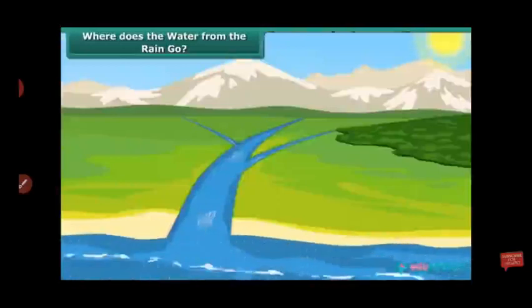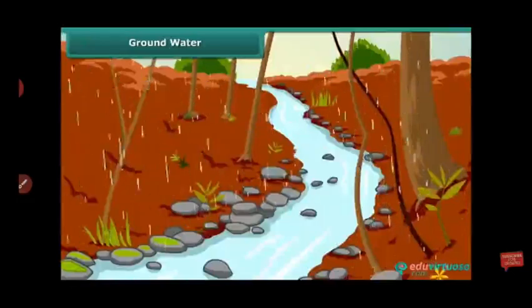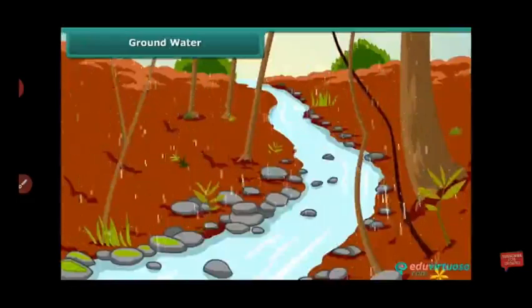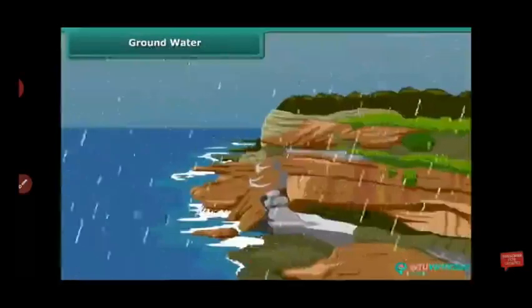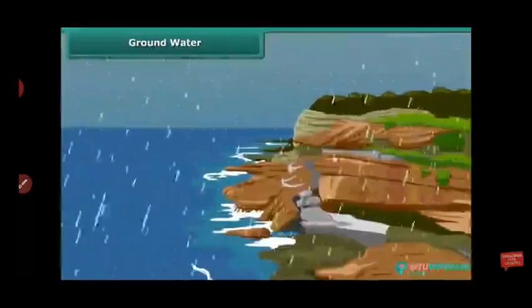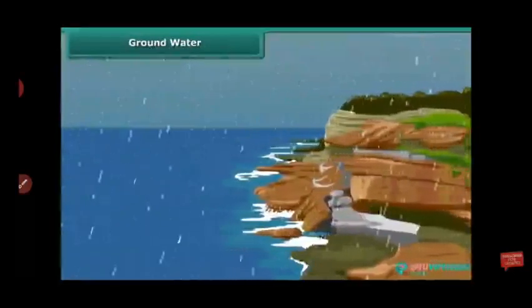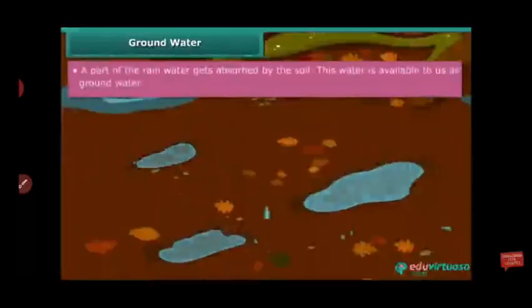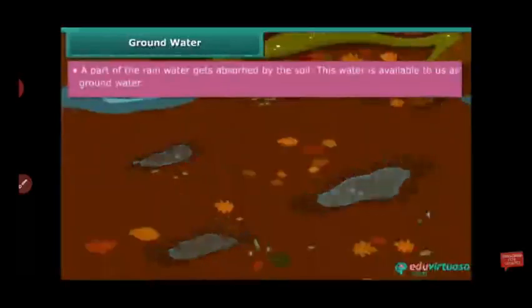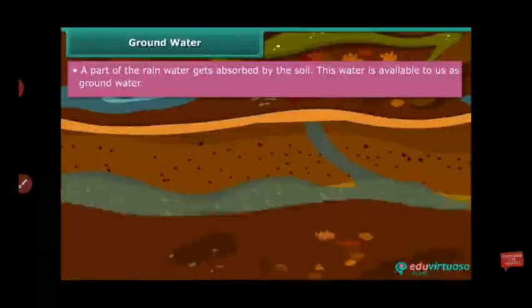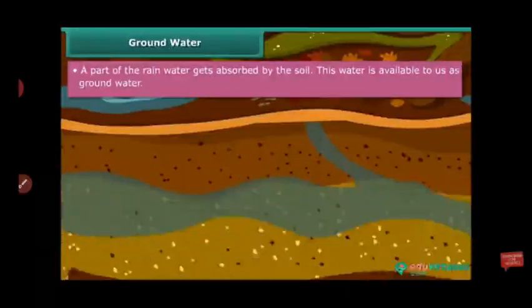This is how water moves in the water cycle. Rainwater seeps into the soil, and this water is available to us in the form of groundwater.